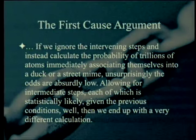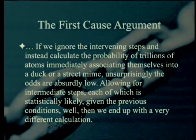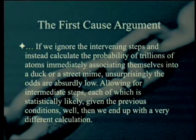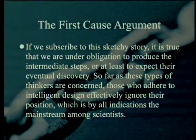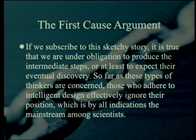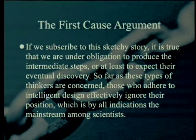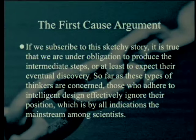When you say 'albeit by as yet unknown intermediate processes,' what you're saying is that you don't really have any evidence for your position — you're basically hypothesizing without evidence. The book notes: if we ignore intervening steps and calculate the probability of trillions of atoms immediately associating into a duck, the odds are absurdly low. Allowing for intermediate steps, each statistically likely given previous conditions, we end up with a very different calculation — although it still may be absurdly low.